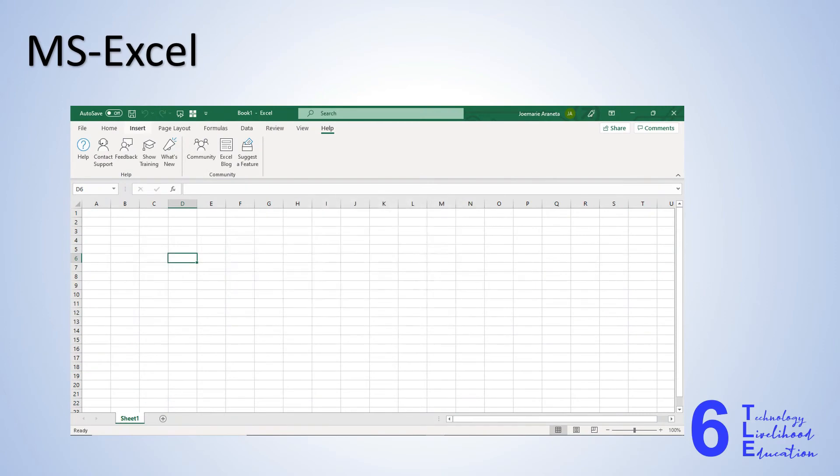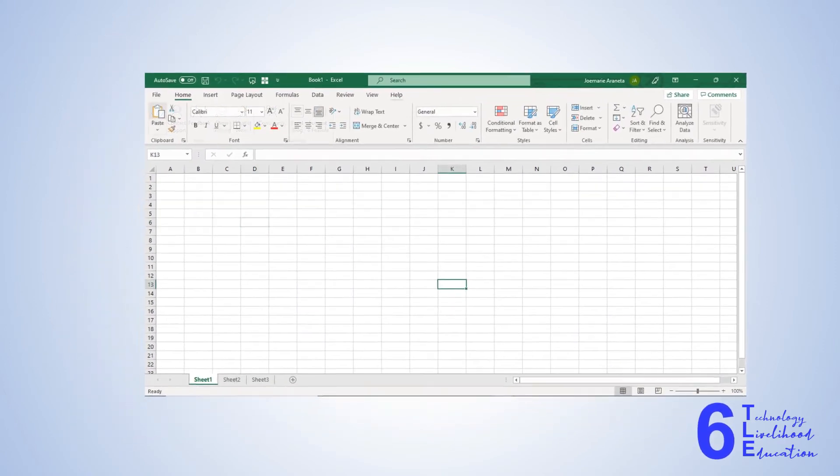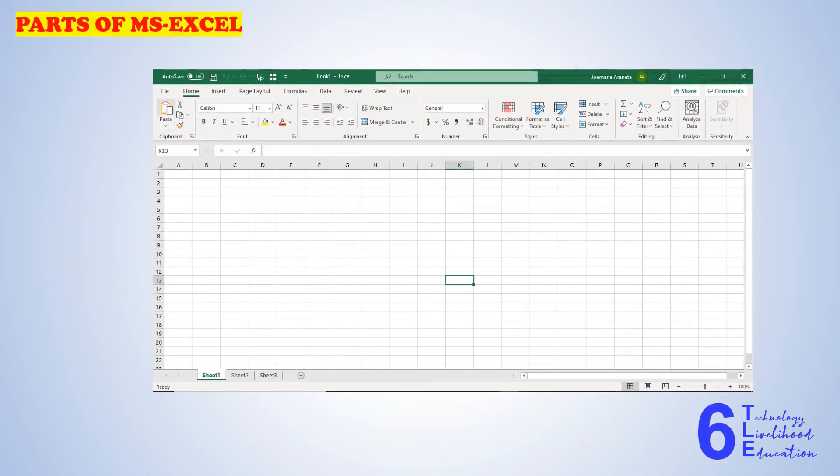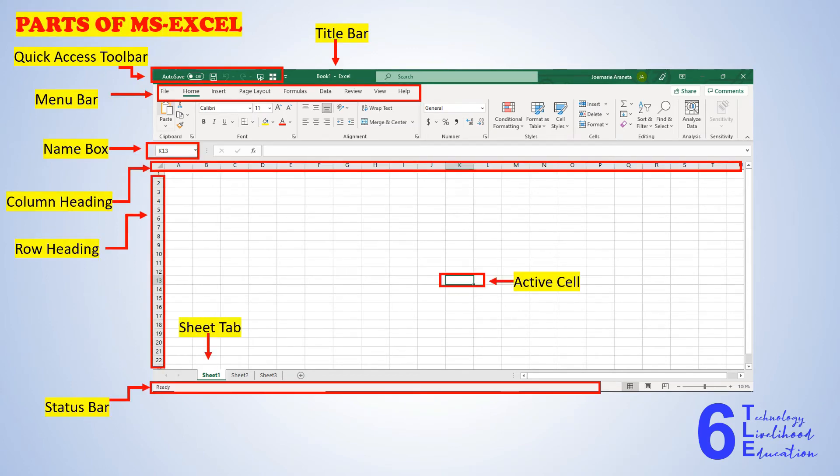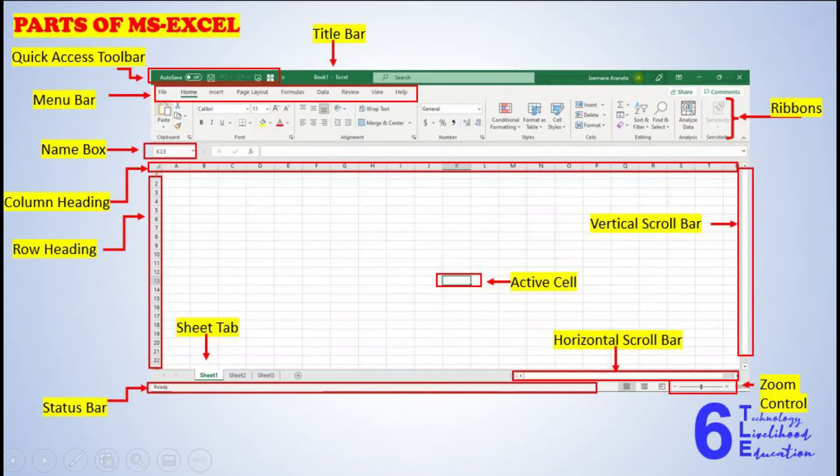Let us now identify the different parts of Microsoft Excel. Title bar, quick access toolbar, menu bar, name box, column heading, row heading, status bar, sheet tab, active cell, horizontal scroll bar, vertical scroll bar, zoom control, and the last part is ribbons.